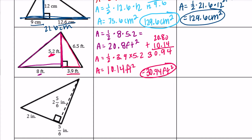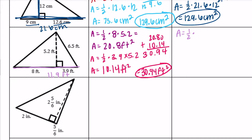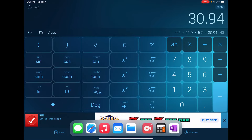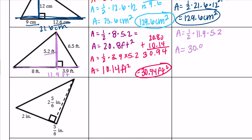Let's verify using the whole triangle at once. The full base is 8 plus 3.9, which is 11.9 feet, and the height is 5.2. So area equals one-half times 11.9 times 5.2, which gives 30.94 feet squared. That matches — those are equal.